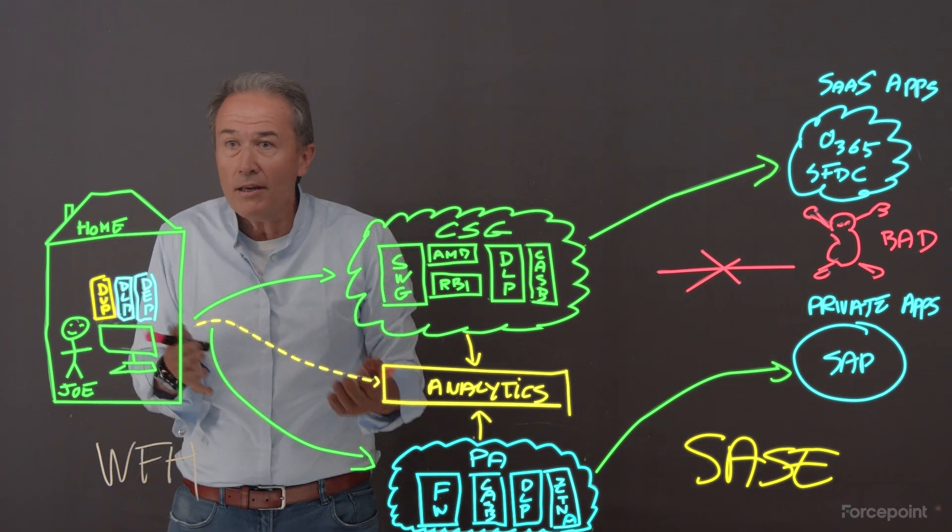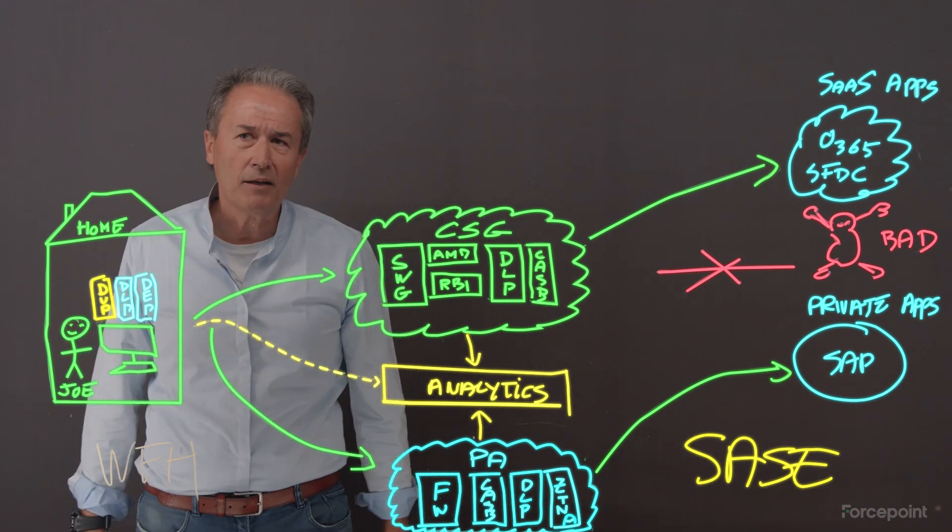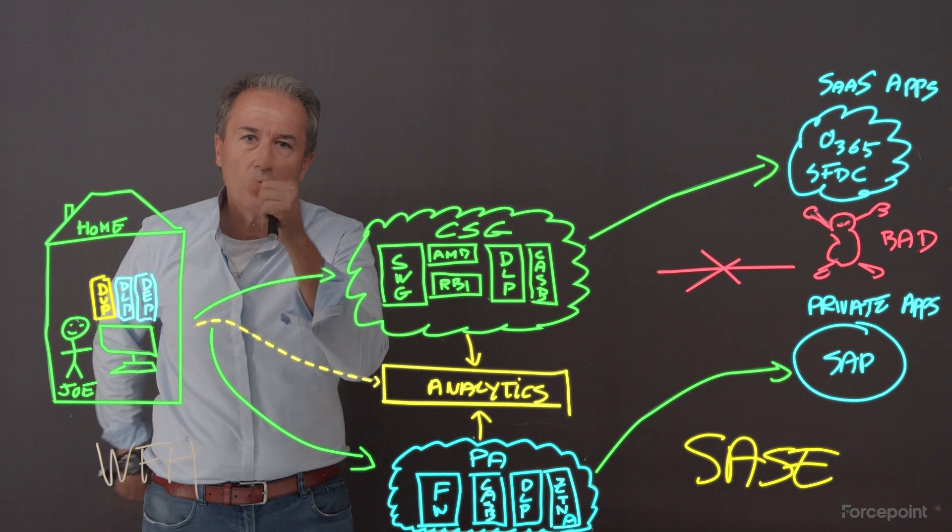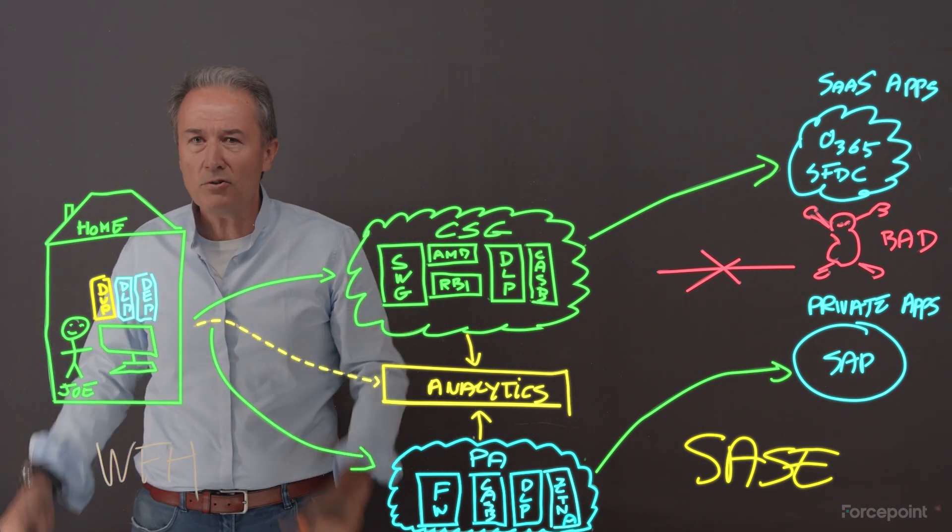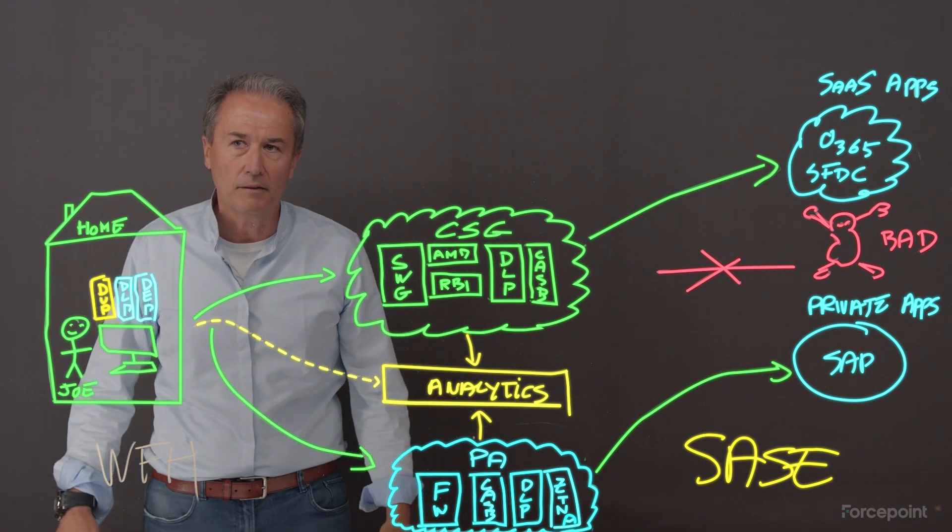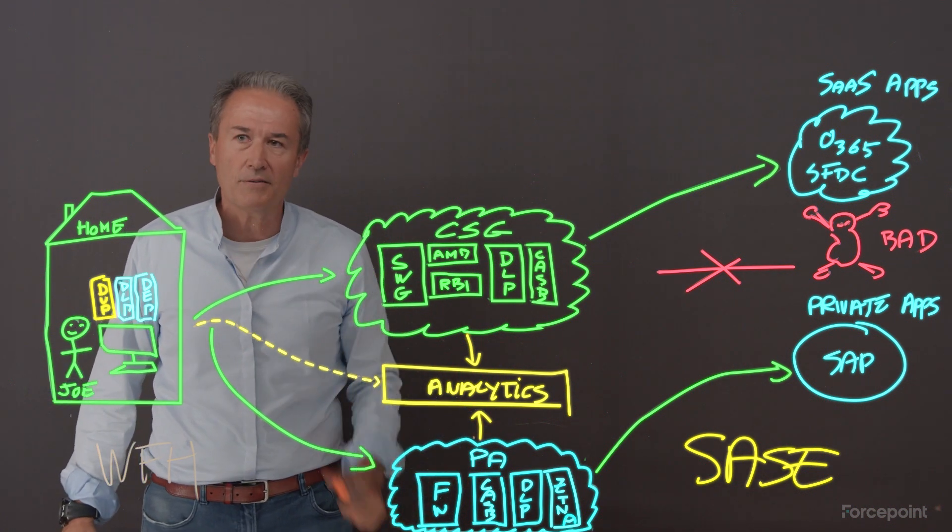So in particular, I know maybe Joe is not really behaving like Joe. Maybe his credentials have been stolen. That's not the real Joe. Maybe Joe was so much under stress that he has become an insider. Insider threat is on the rise. I will learn these things.